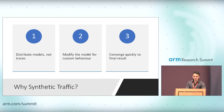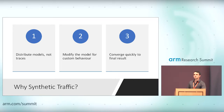We can also converge quickly to a final result. The theme in GEM5 has been trading accuracy for performance, and this is one of those ways. Because this is a profile based on distributions, those distributions tend to converge. Once they converge, we can just end the simulation — there's no reason to keep going.